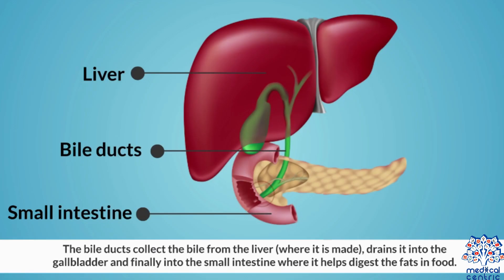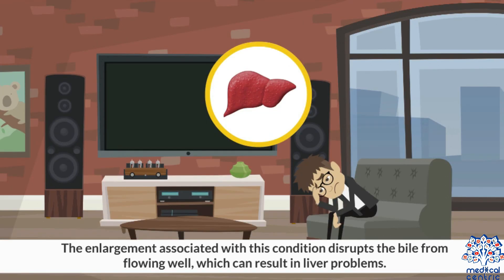The bile ducts collect the bile from the liver where it is made, drains it into the gallbladder, and finally into the small intestine where it helps digest the fats in food. The enlargement associated with this condition disrupts the bile from flowing well, which can result in liver problems.